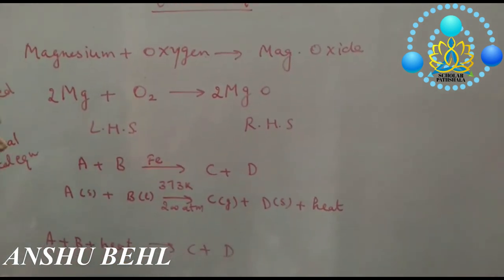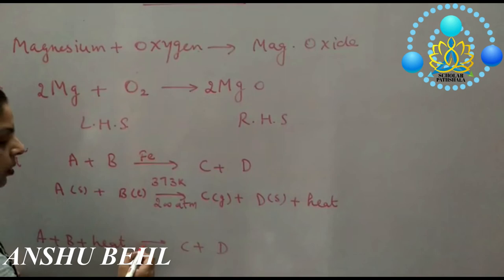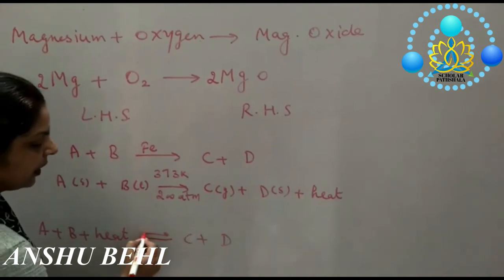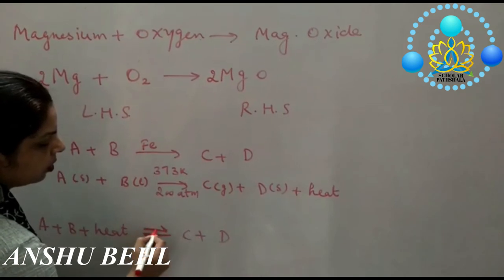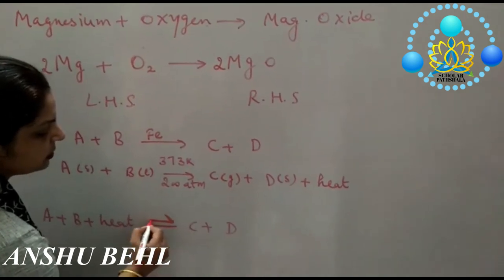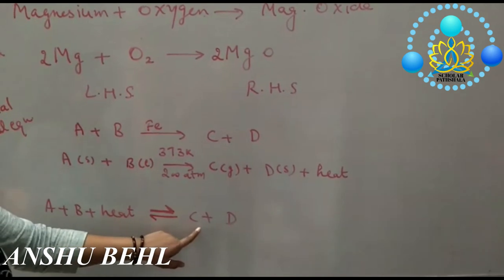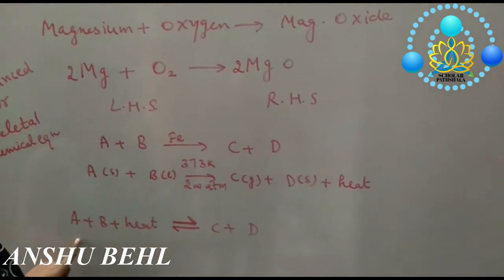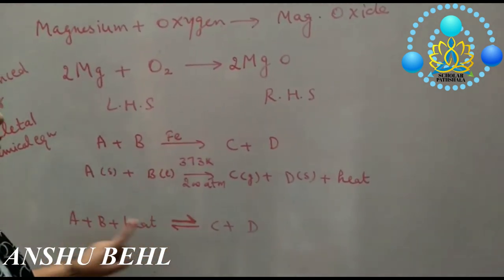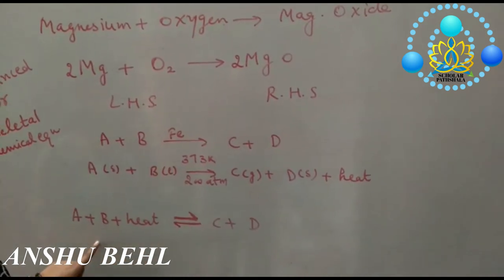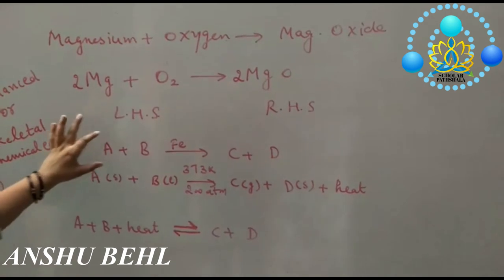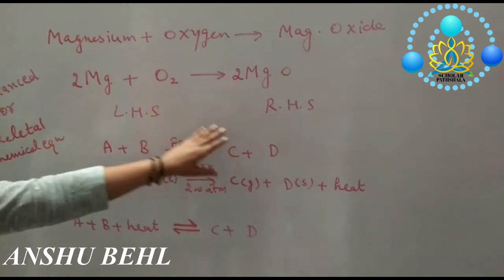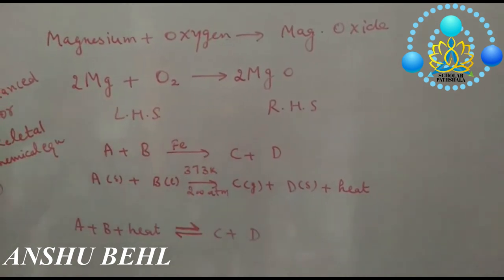If reaction is going in both ways, then you have to put double-headed arrow. This is half arrow shown on both sides, showing that reactant may turn to product and product may turn to reactant. This reaction can go in both ways, so it is reversible reaction. Keep in mind one thing: if forward reaction is exothermic, then backward reaction will be endothermic.